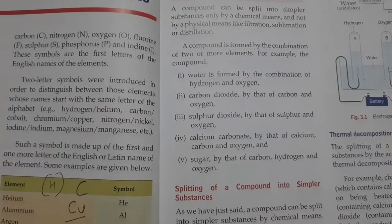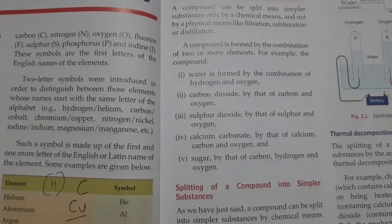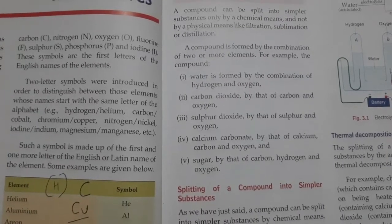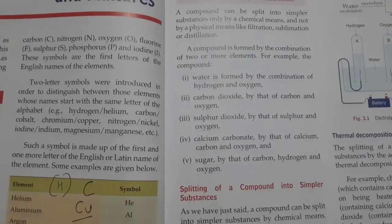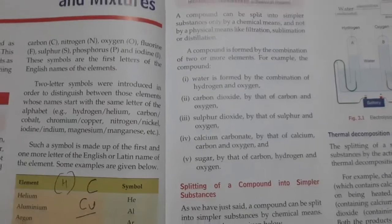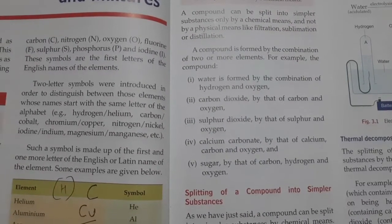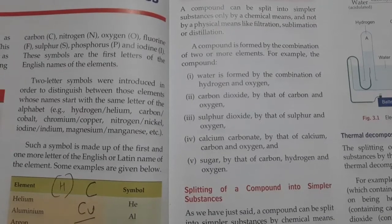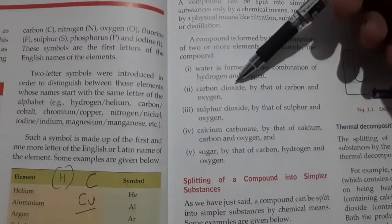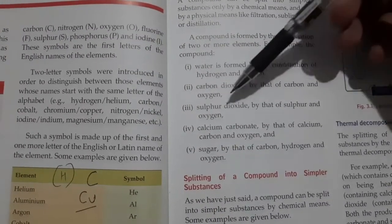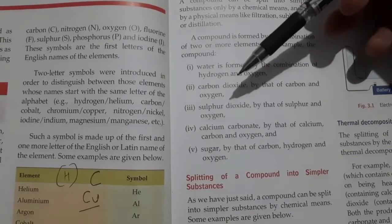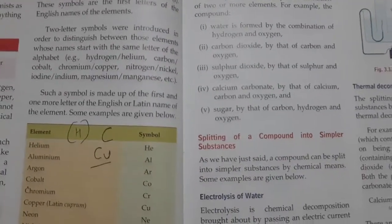A compound's properties are different from the elements it is formed from. For example, water is formed from hydrogen and oxygen — hydrogen burns with a blue flame and oxygen supports combustion, but water doesn't burn and does not support combustion. Similarly, carbon is black in color and oxygen supports combustion, but carbon dioxide does not support combustion and is a gas.